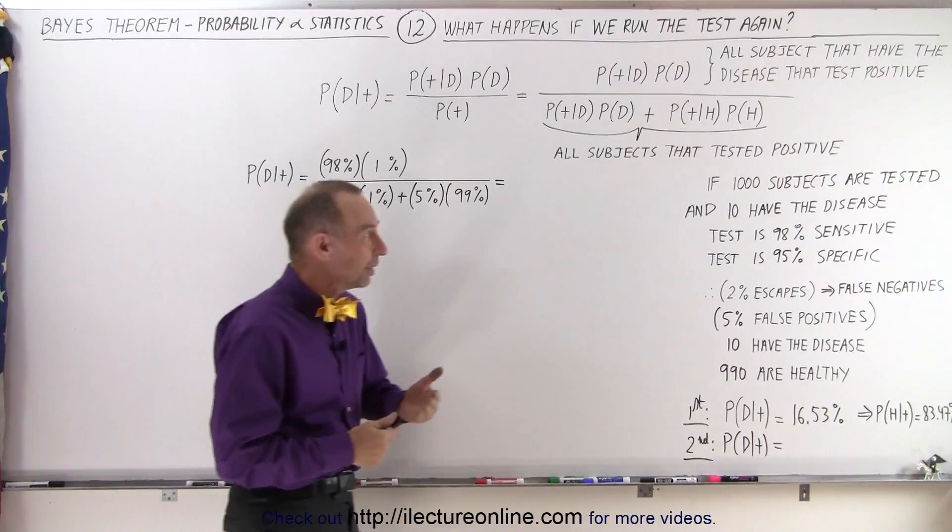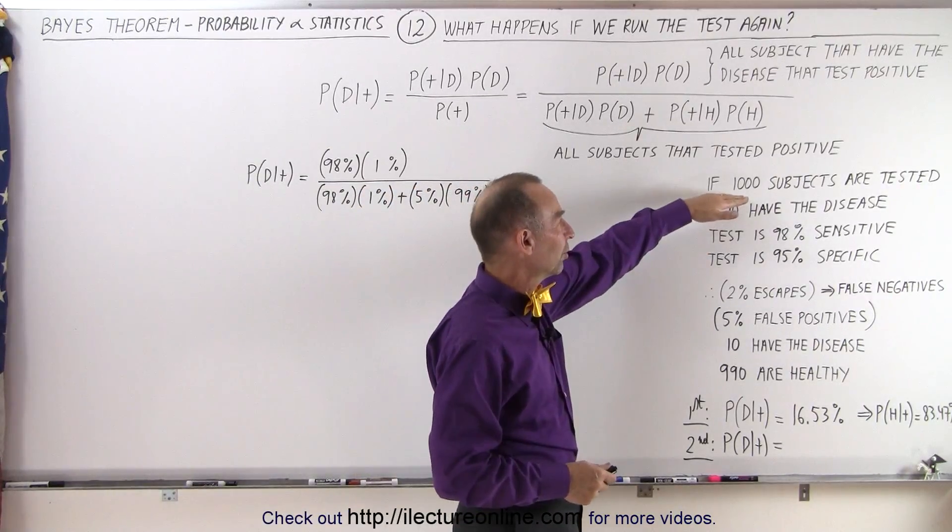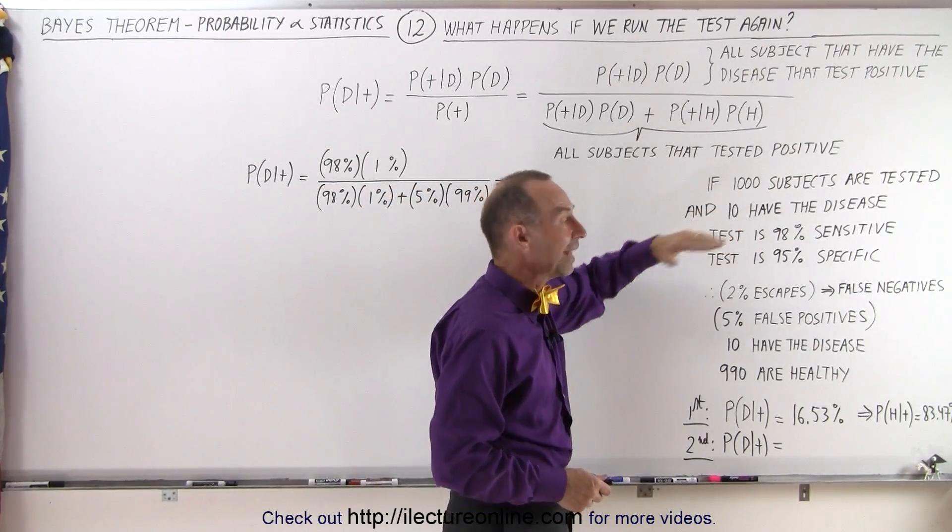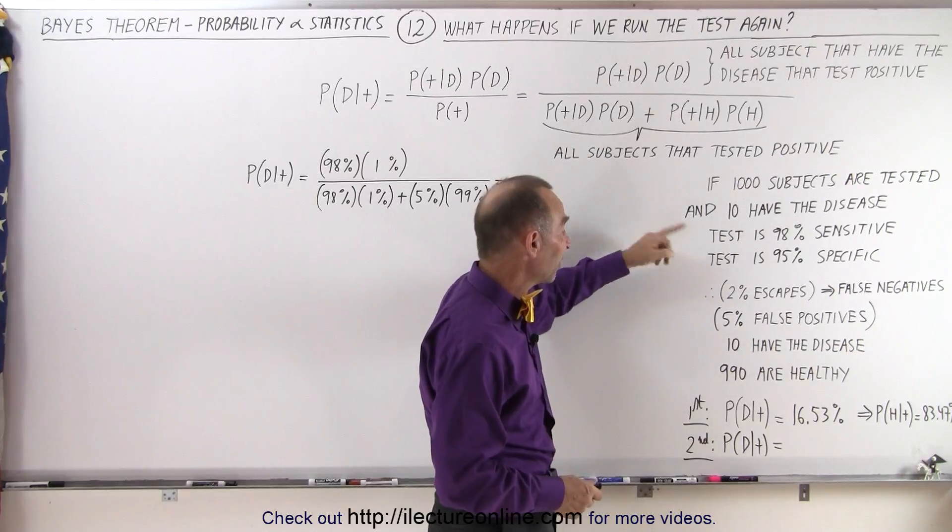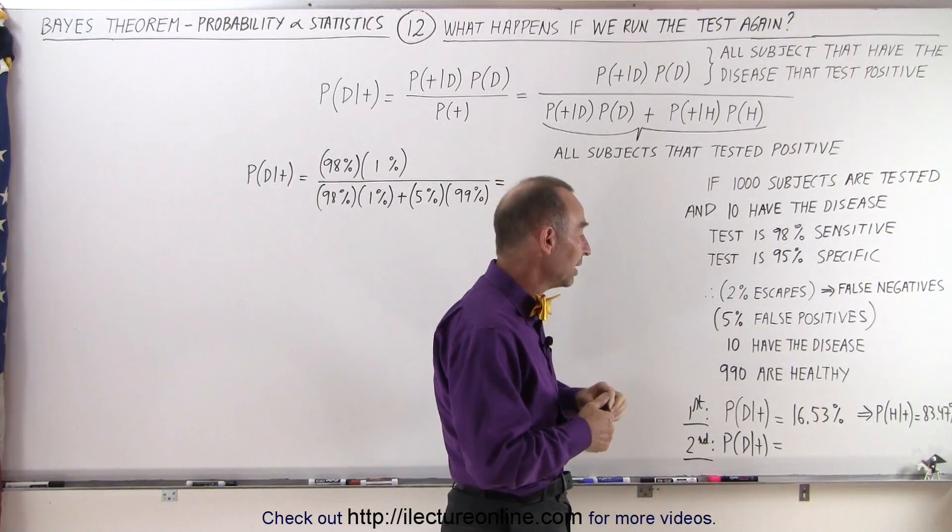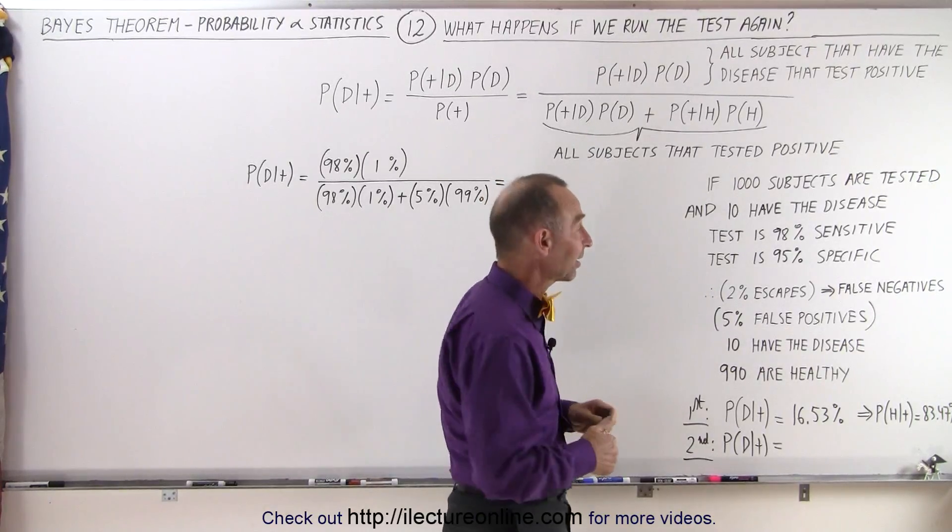The condition is relatively rare. Let's say that we have a condition that's such that 10 out of a thousand have this condition, which means that only 1% of the population being tested has the condition.